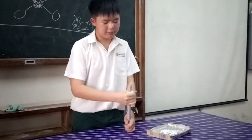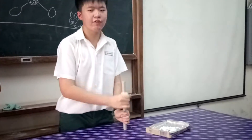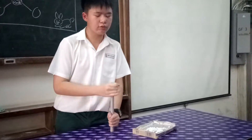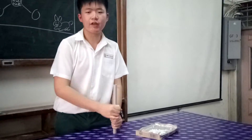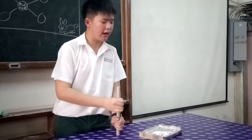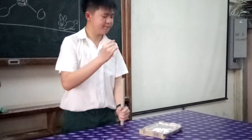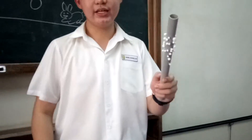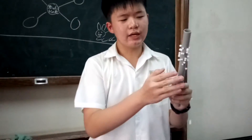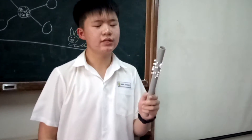When we rub this sponge onto the PVC pipe, it will transfer negative charges onto the PVC pipe. So the question is, what will happen if we put the PVC pipe onto the box? As you can see, the ball has been stuck to the PVC pipe.